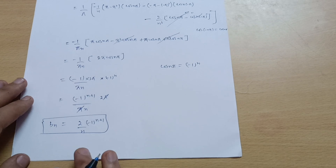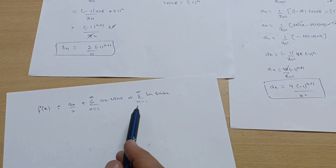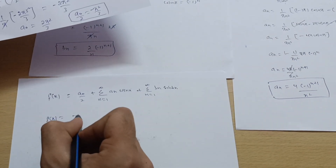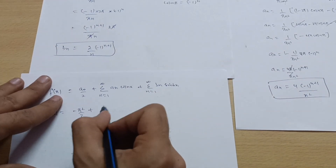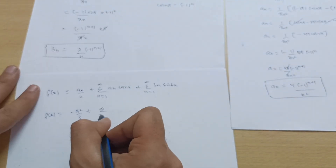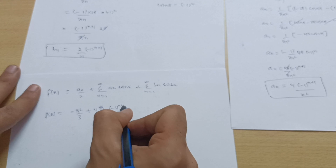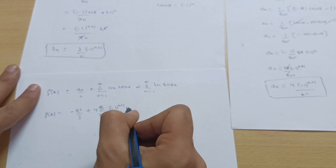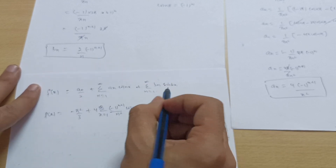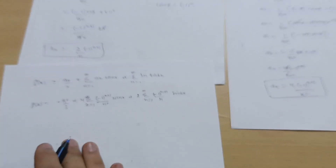All Fourier coefficients are calculated. Substituting into the Fourier series: f(x) = −π²/3 + 4∑(n=1 to ∞) [(−1)^(n+1)/n²] cos(nx) + 2∑(n=1 to ∞) [(−1)^(n+1)/n] sin(nx).